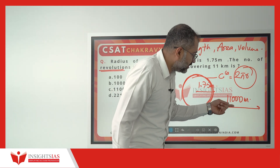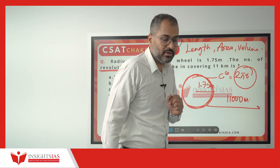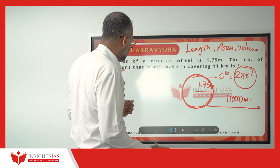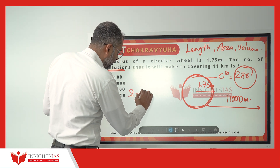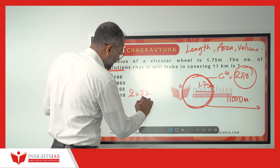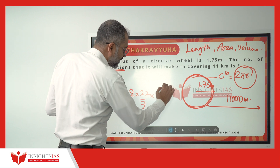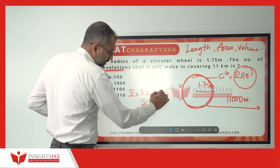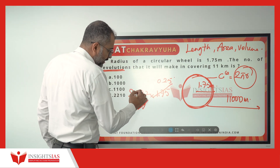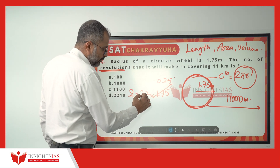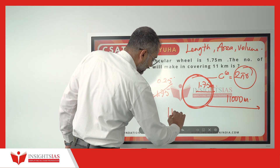To cover 11,000 meters, how many revolutions does it take? 2πr is equal to 2 into 22/7, and the radius given is 1.75 meters. 7 into this is 0.25; 0.25 into 2 is 0.5; 0.5 into 22 is nothing but 11 meters.